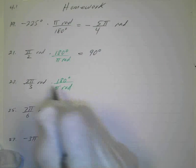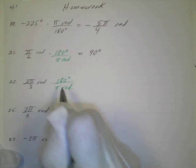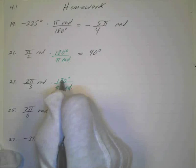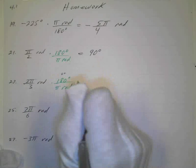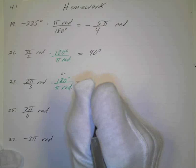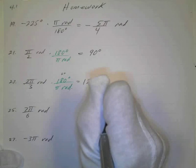And again, you can see that the radians cancel and the pi's cancel. 3 goes into 180 how many times? 60. And what's 2 times 60? 120 degrees.